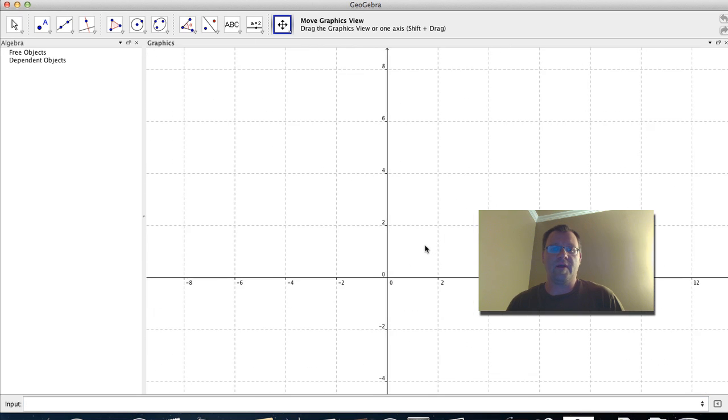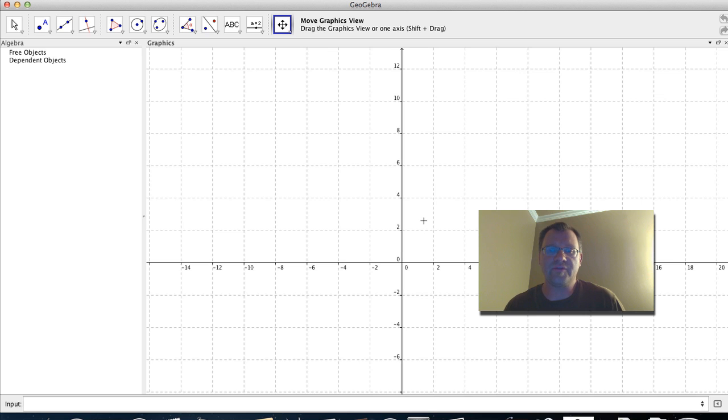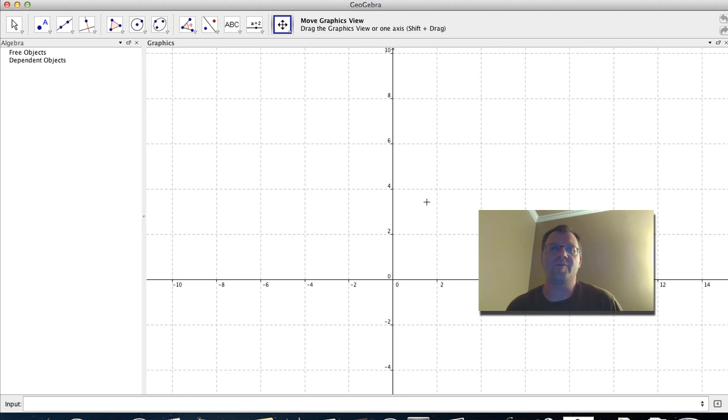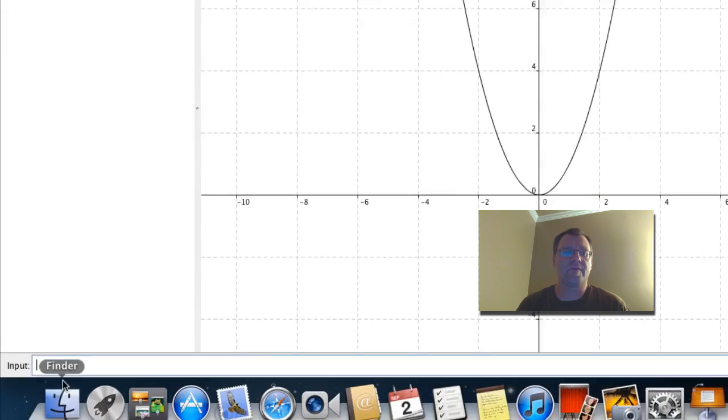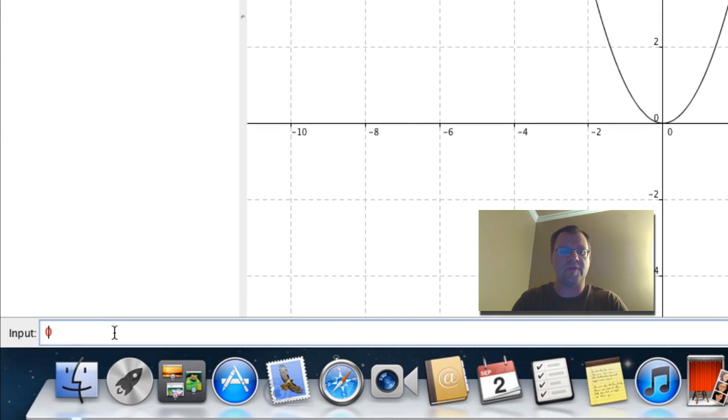So let's try and make a horizontal translation. Horizontal means that the graph is going to move left to right. So again, we're going to start with our original function, which is x squared. If we introduce some brackets and we put in, say, x minus 3, and then we square that.